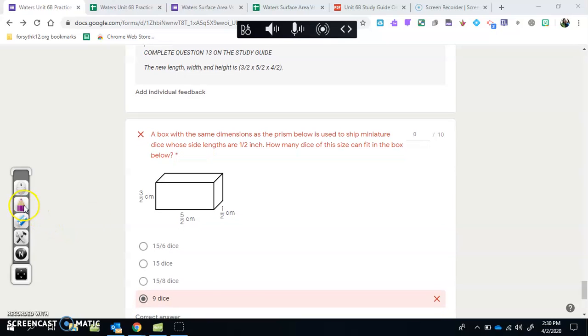Now our last one. A lot of people have been selecting this answer, but this answer choice does not make sense. Our question is saying how many dice can fit in the box, and you said fifteen-eighths dice. That answer choice doesn't make sense. Make sure you slash the trash - these fractions don't make sense to this question. Let's talk about what it's actually asking. A box with the same dimensions as the prism below is used to ship miniature dice whose side lengths are one-half an inch. So here's my dice - it's one-half by one-half by one-half.